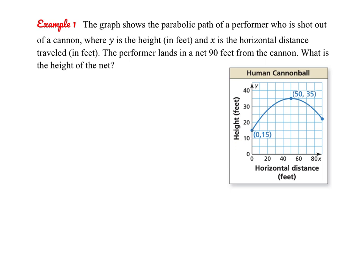Let's take a look at this first example together. The graph shows the parabolic path of a performer who is shot out of a cannon, where y is the height in feet and x is the horizontal distance in feet traveled. The performer lands in a net 90 feet from the cannon. What is the height of that net? We need to create a model for the performer's height and use it to find that height. Looking at the information given, we have the vertex and an additional point, so we will be using vertex form.